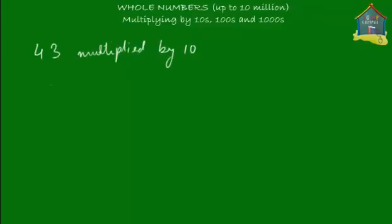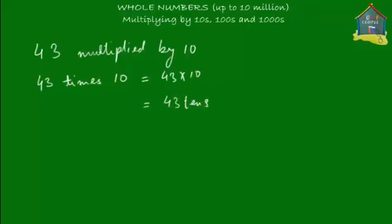43 multiplied by 10 means you're saying 43 times 10, which is equal to 430. So you see, when you say 43 times 10, it means 430.